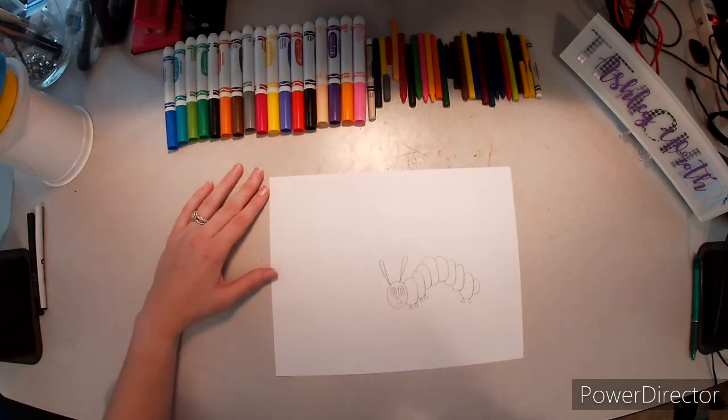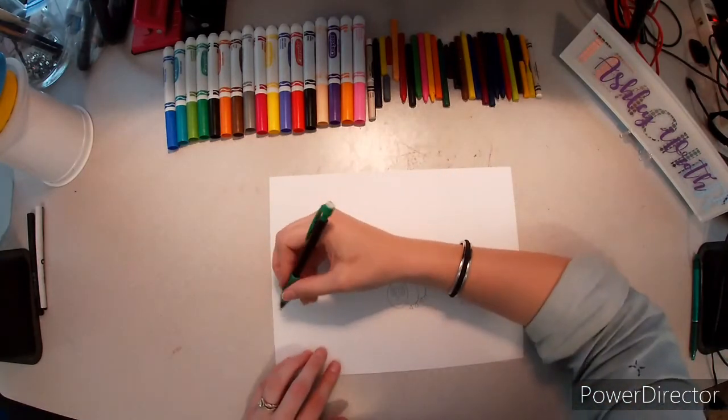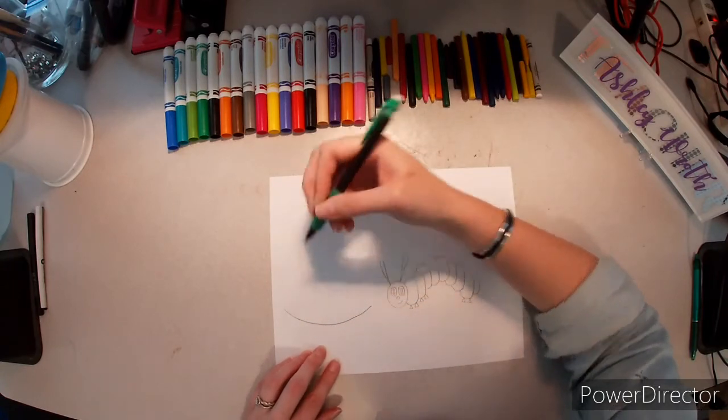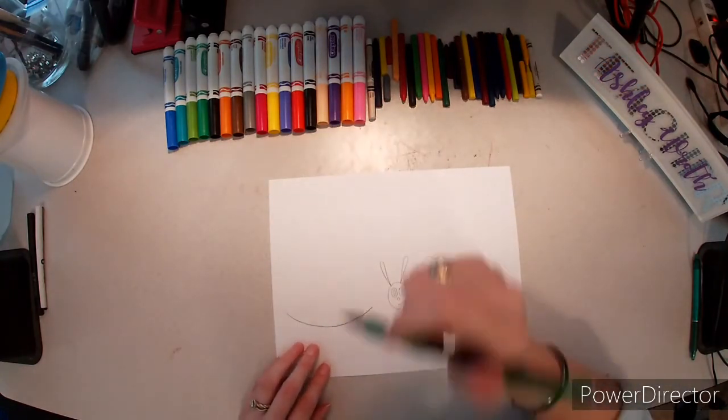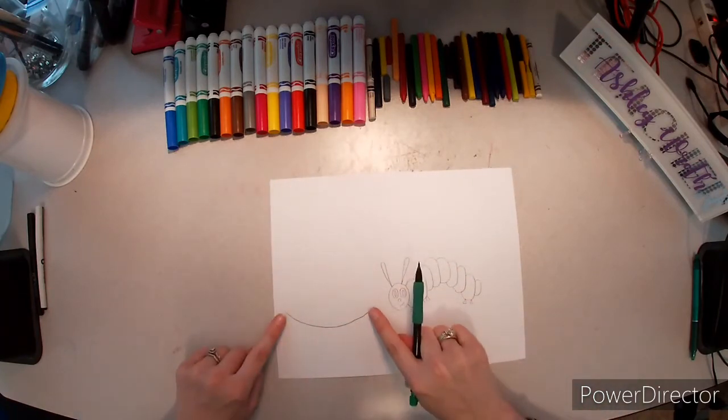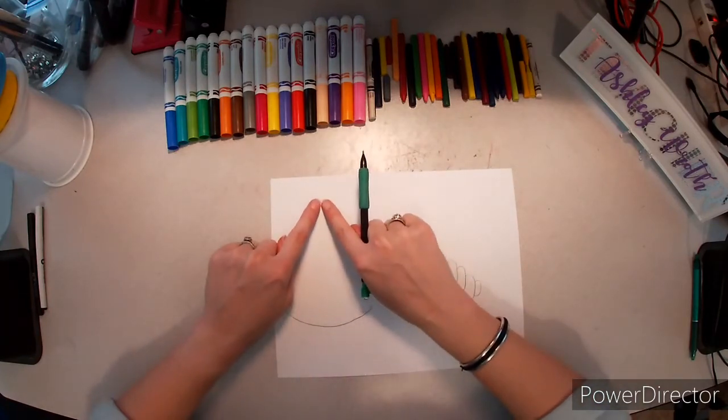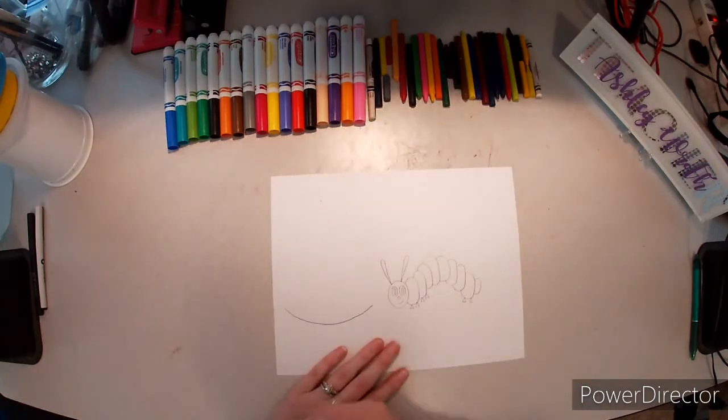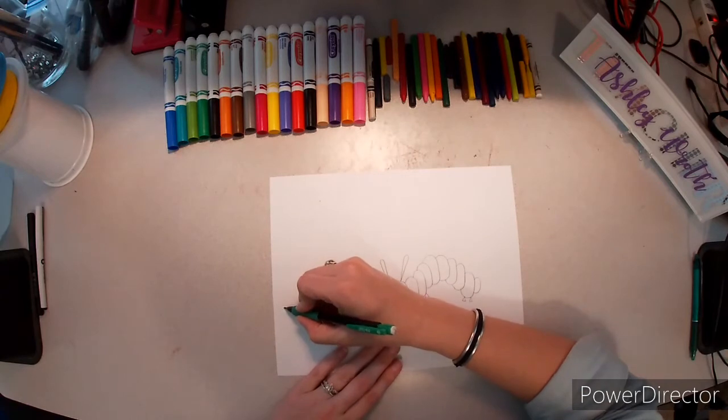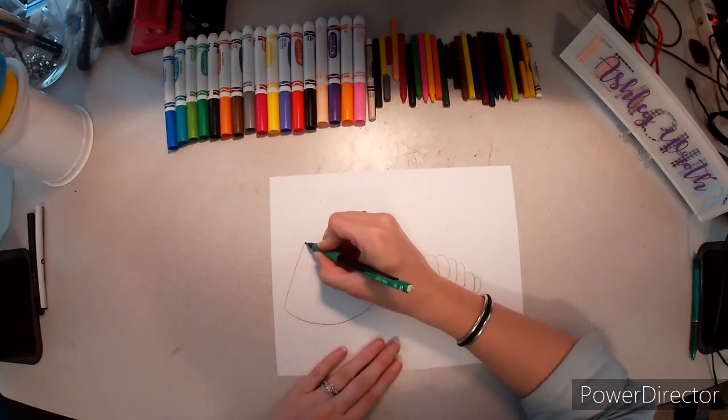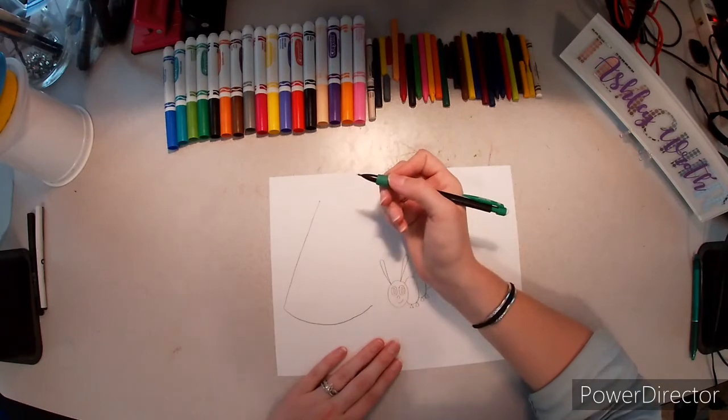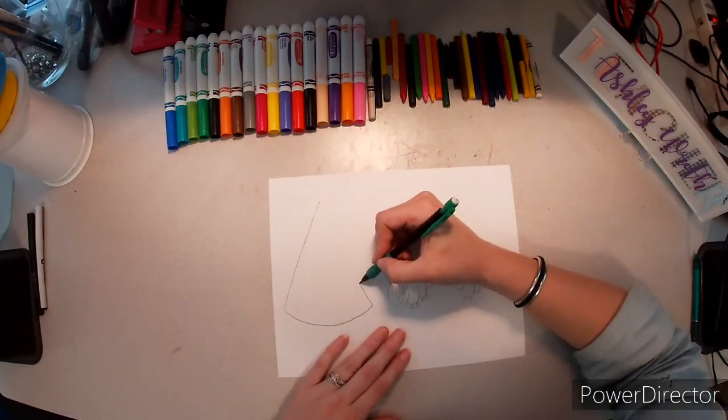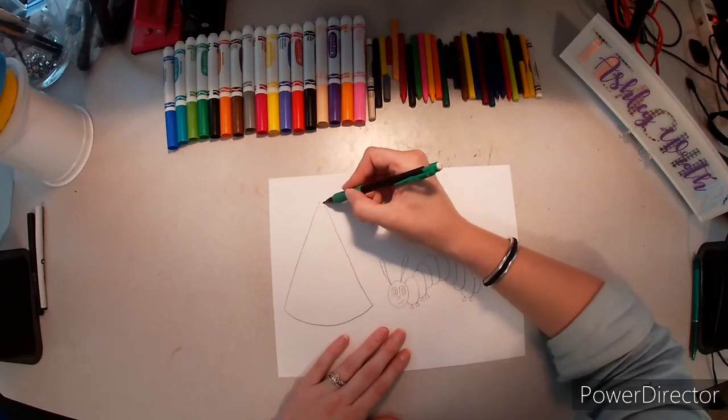Now, for our watermelon, we're going to do a big curve because we're just doing a watermelon slice. Then, we want these two sides to go together and make a point. So, I'm going to draw a little dot and that's the point that I'm aiming at. So, I'm going to start here and I'm aiming towards that dot.